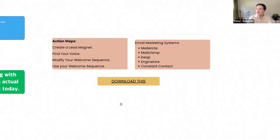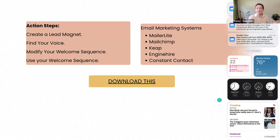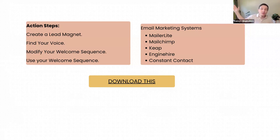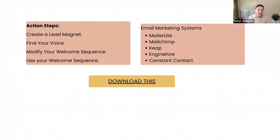Here are some action steps: create a lead magnet, find your voice, modify your welcome sequence, and use your welcome sequence. That's a ton of things in four sentences. Create a lead magnet — I think you can handle it. It could be 10 questions, it could be five questions, it could be the number one question you should have. Whatever you think people need, and they will click for it — that's what you should give them. Only give them things that will actually help them. Sending something that's not going to help your target market is not going to help you at all.